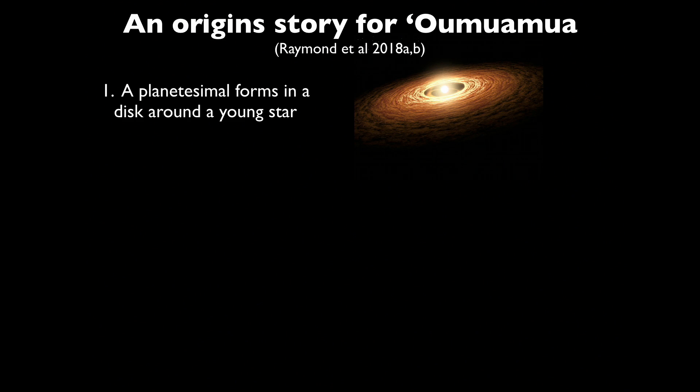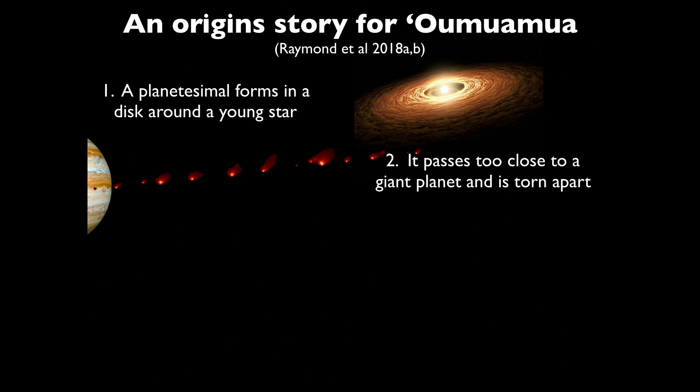So to summarize our origin story for Oumuamua, we think its parent body, a planetesimal, formed in a disk around a young star. That planetesimal passed too close to a giant planet, maybe a Neptune-like planet, maybe a Jupiter-like planet, and was torn to many, many pieces.